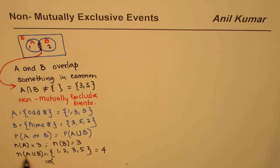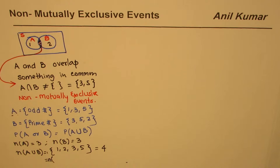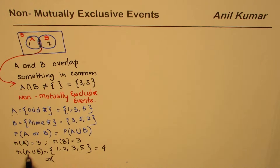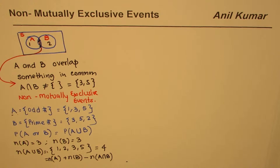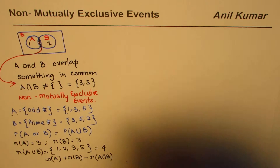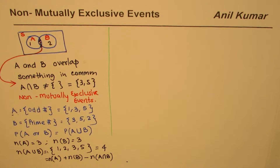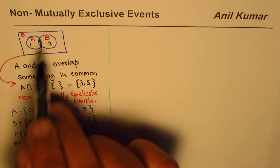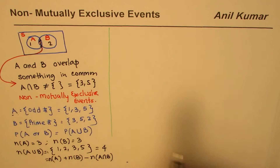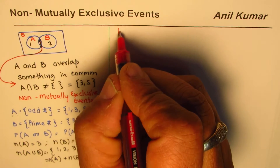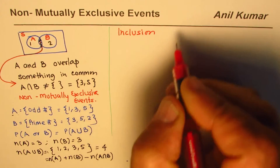Therefore we have a rule: if there is an overlap, the number of elements in A or B will be the number of elements in A plus the number of elements in B, minus the number of elements in the intersection of A and B. This gives us the principle of inclusion-exclusion.